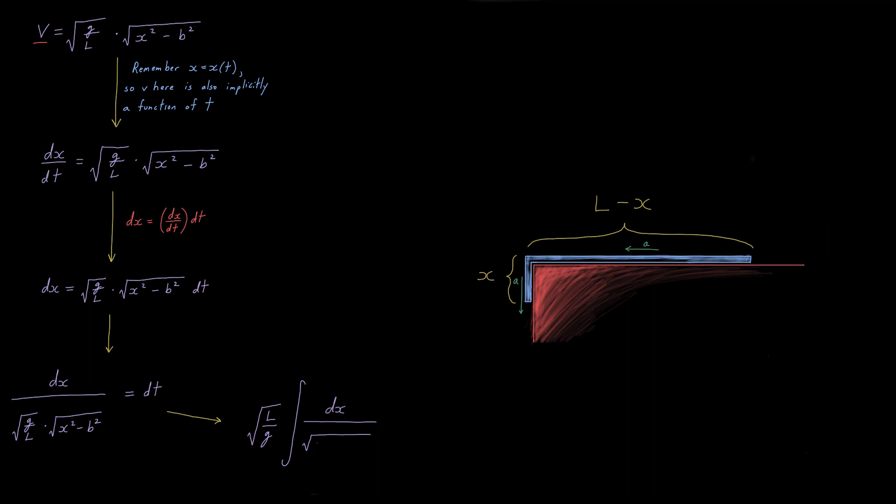we want to be careful with our bounds of integration. When x is b, t is 0, the problem hasn't started. And when x is L, i.e. the entire chain has just fallen off the table, let's call that time that goes with it t_f. t_f is what we're trying to find. x initial is b, and x of t_f is L. The entire chain has just fallen off the table here.